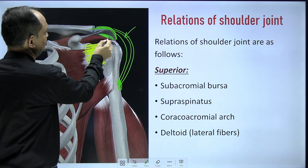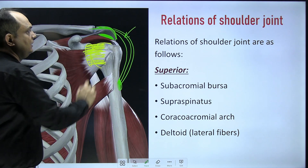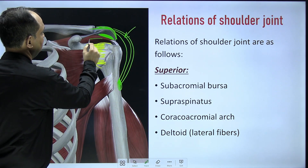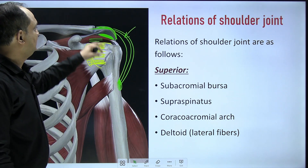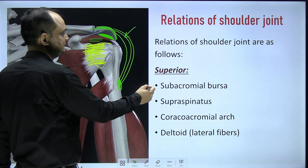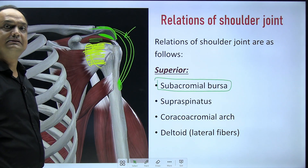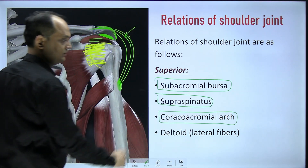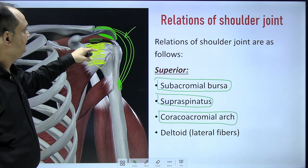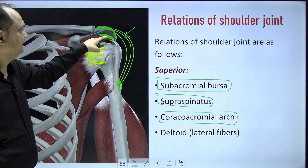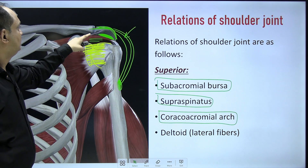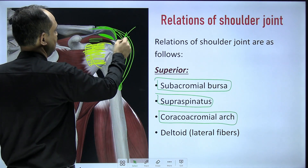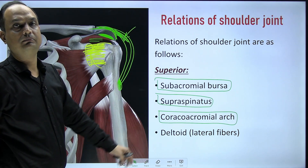Below the acromion process, you have the subacromial bursa. The subacromial bursa separates the inferior surface of the acromion process and the coracoacromial arch from the supraspinatus muscle. So in the superior part, from deep to superficial: supraspinatus muscle, then the subacromial bursa, then the acromion process and coracoacromial ligament forming the coracoacromial arch, and all of these lie deep to the deltoid muscle.